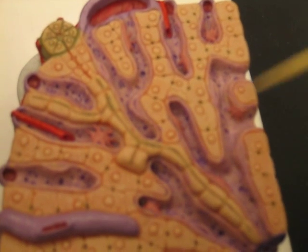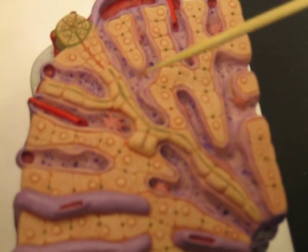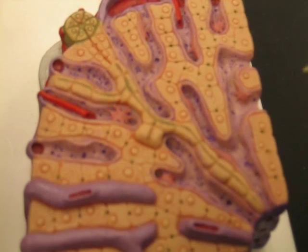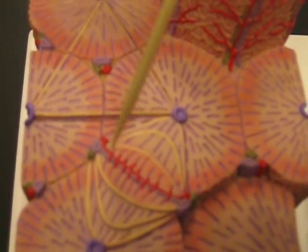This whole thing is the hepatic triad. There's one in each of the six corners of the lobules, so if you go back to the lobules, you can see one in each corner.